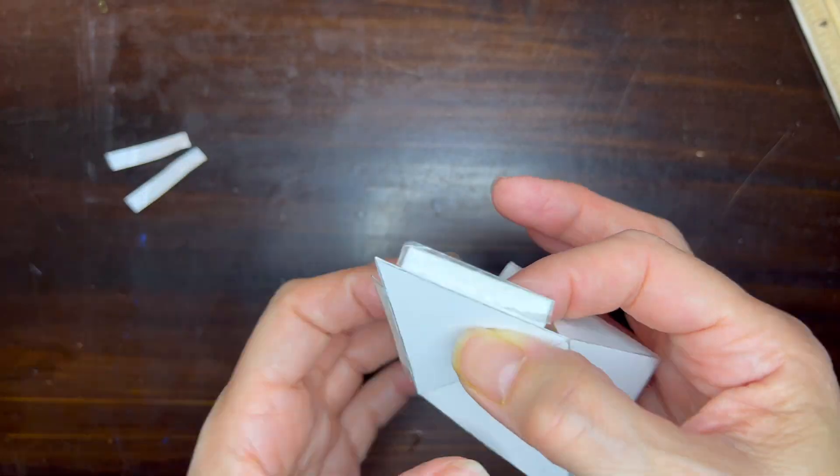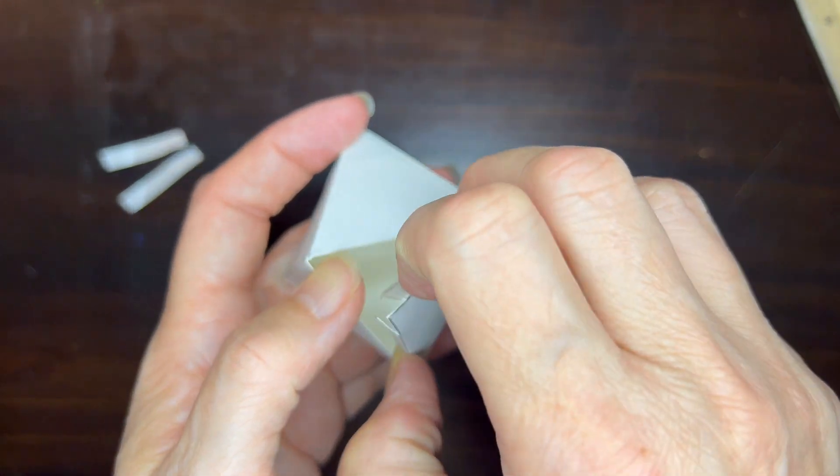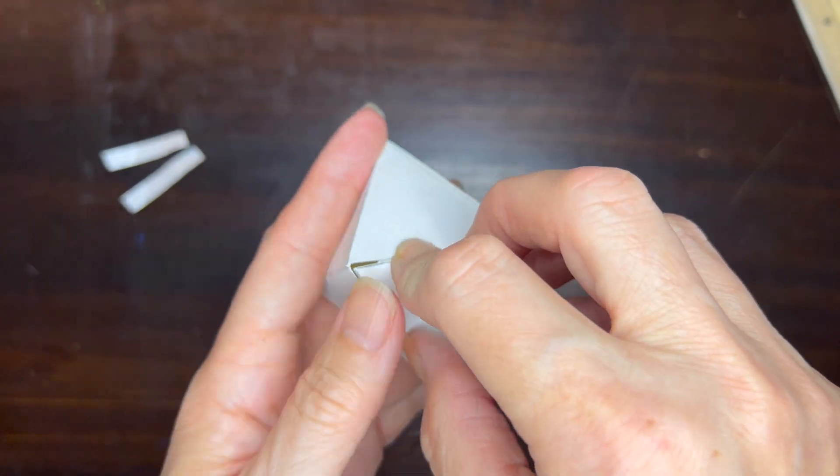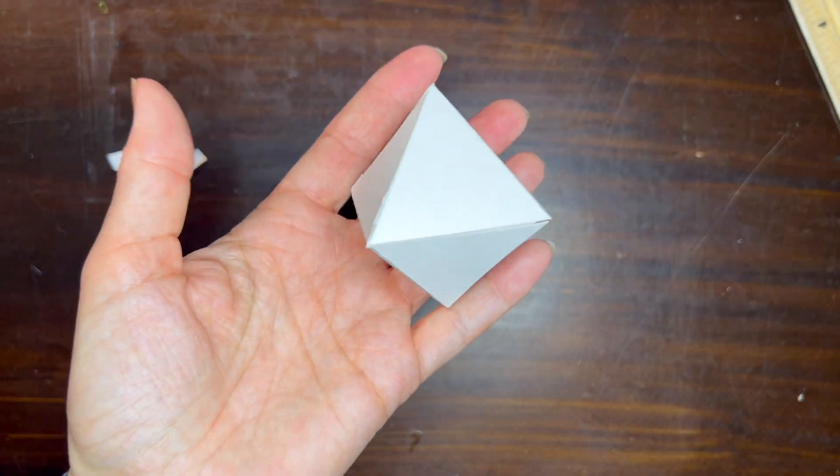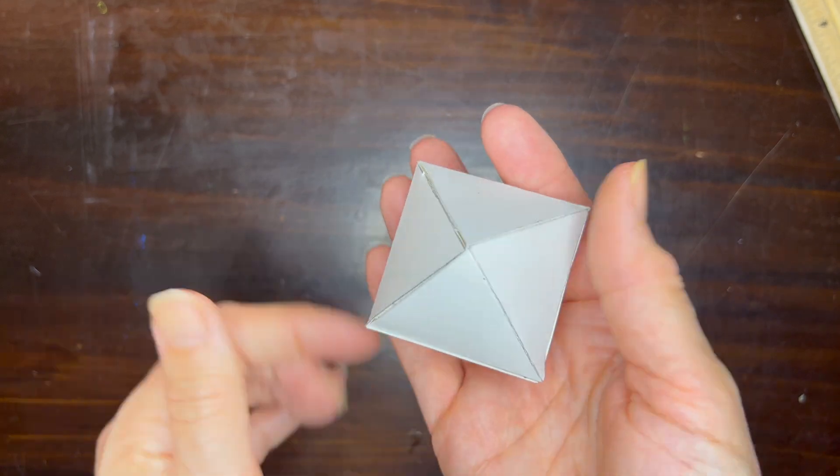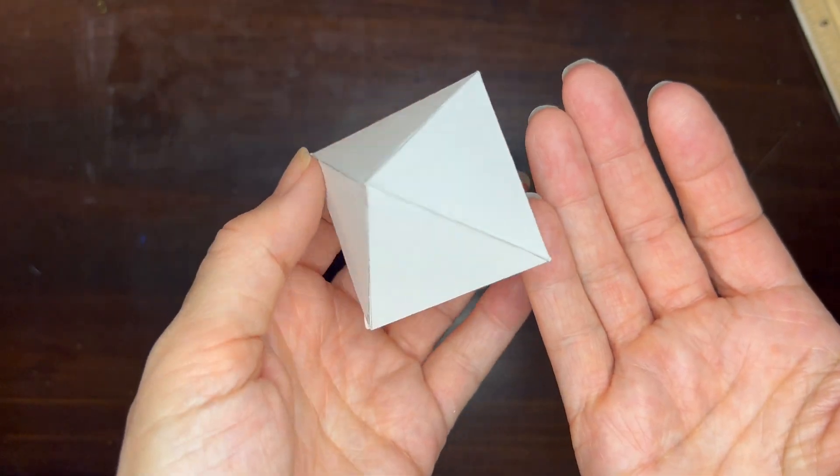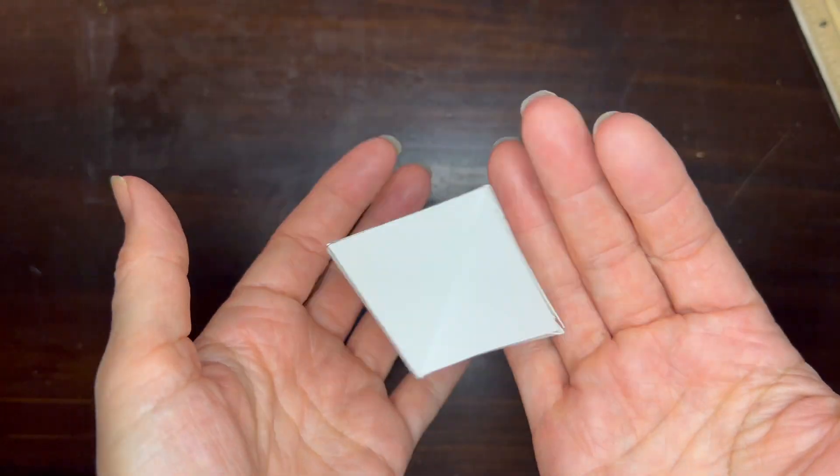We're just going to slip in the last piece here with those two tabs inside and then that completes our octahedron. Of course you can always print off your own template but I really love doing this geometry from start to finish. So with just a few simple tools you can create your own regular solids.